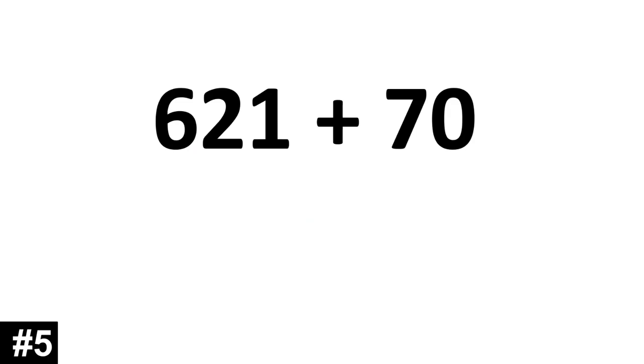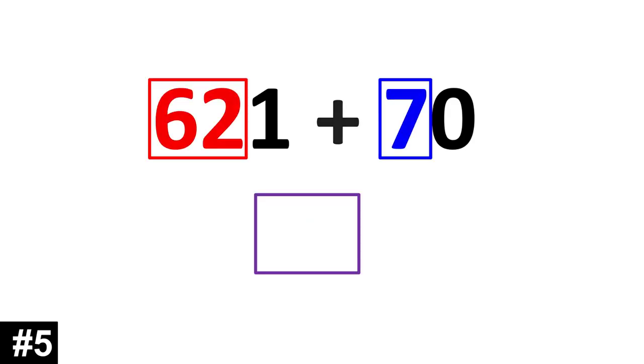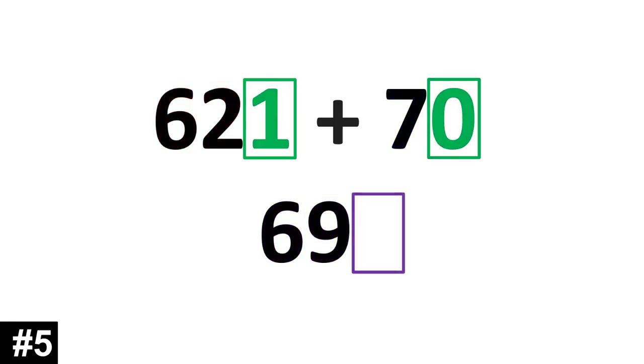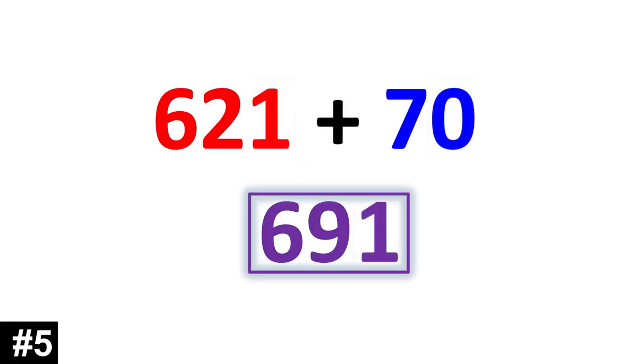621 plus 70. We have 62 tens plus 7 tens. We put them together, and we get 69 tens. We look to the ones. 1 plus 0 is 1. So, 621 plus 70 is 691.